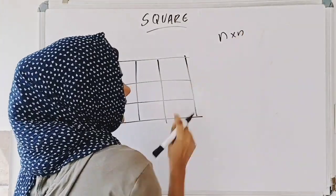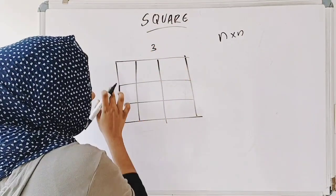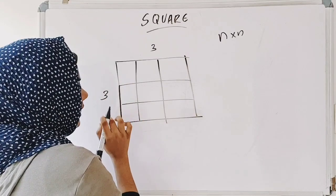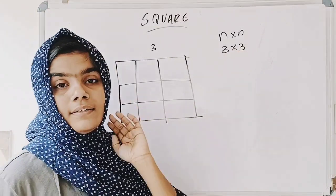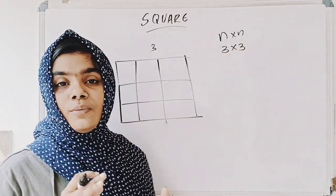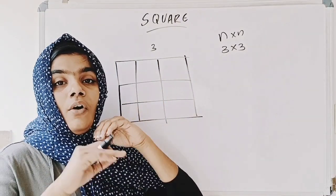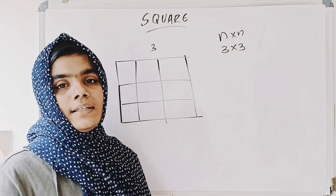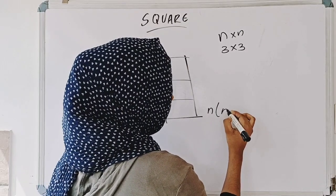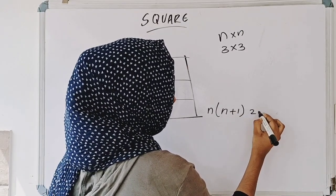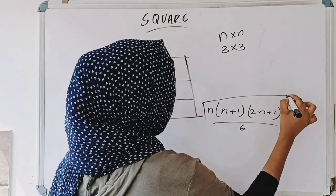If we add 2 sides, then we will find 3. If we add N, we have 1 number. In this case, the horizontal item and the vertical item has one number. Let's do the method: n into n plus 1 into 2n plus 1 divided by 6. This is a unique equation.